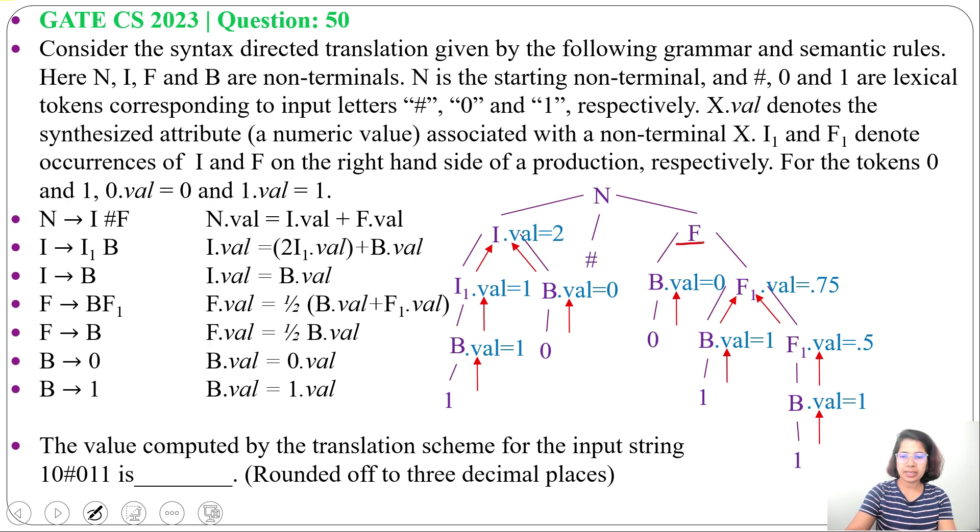Next, for this F value, again we will find half of B value plus F1 value. So, half of 0 plus 0.75 is 0.375. Now, we got both I value and F value. We can find N value. N value equals I value plus F value. So, N equals 2 plus 0.375.